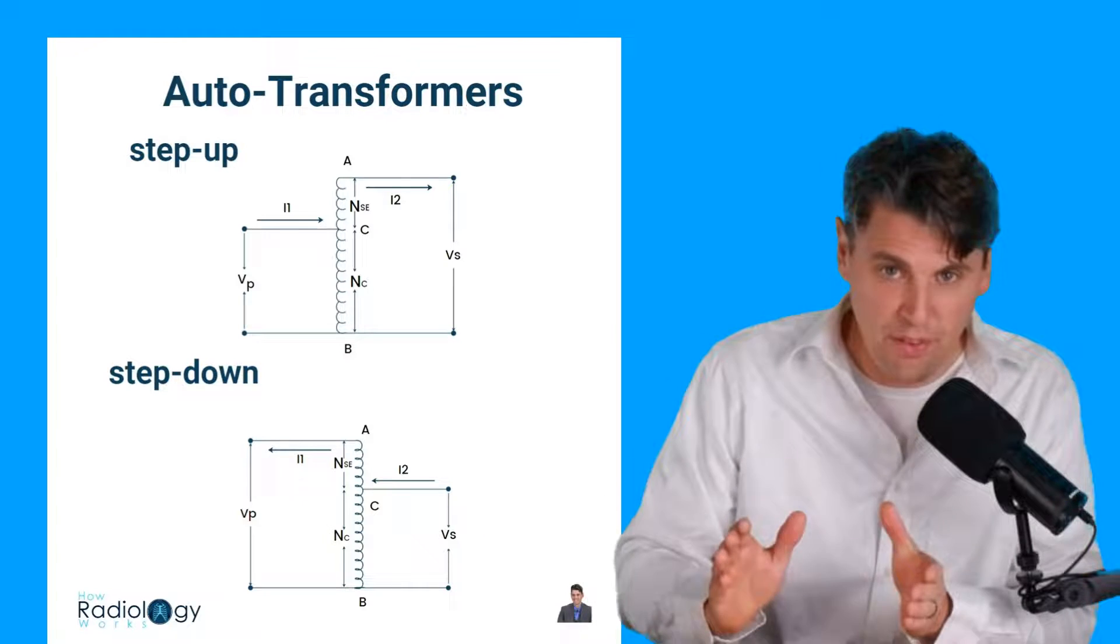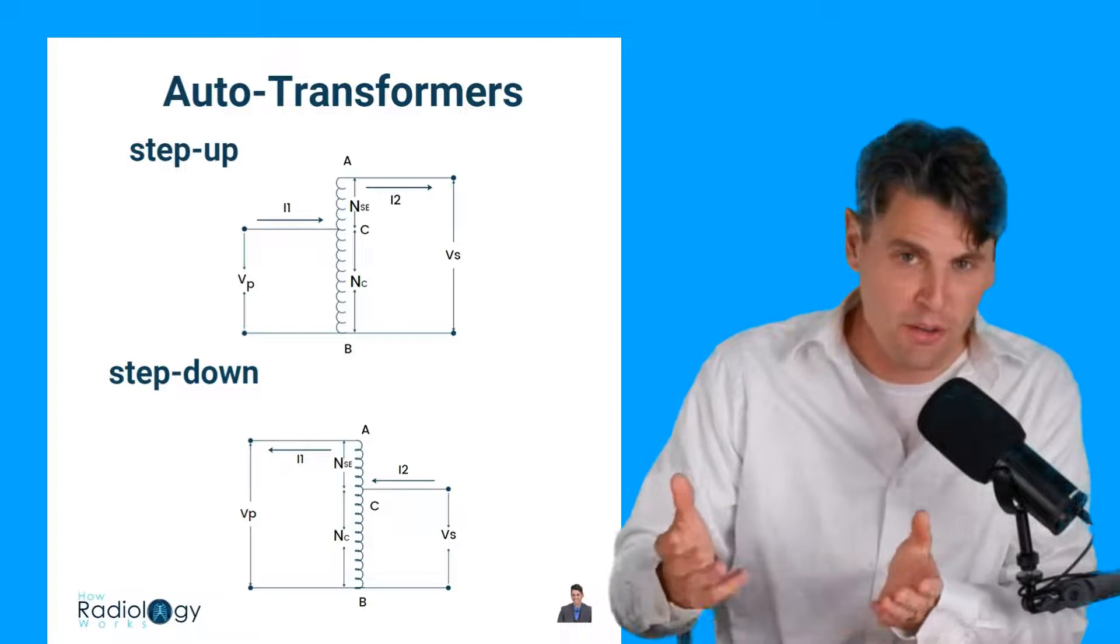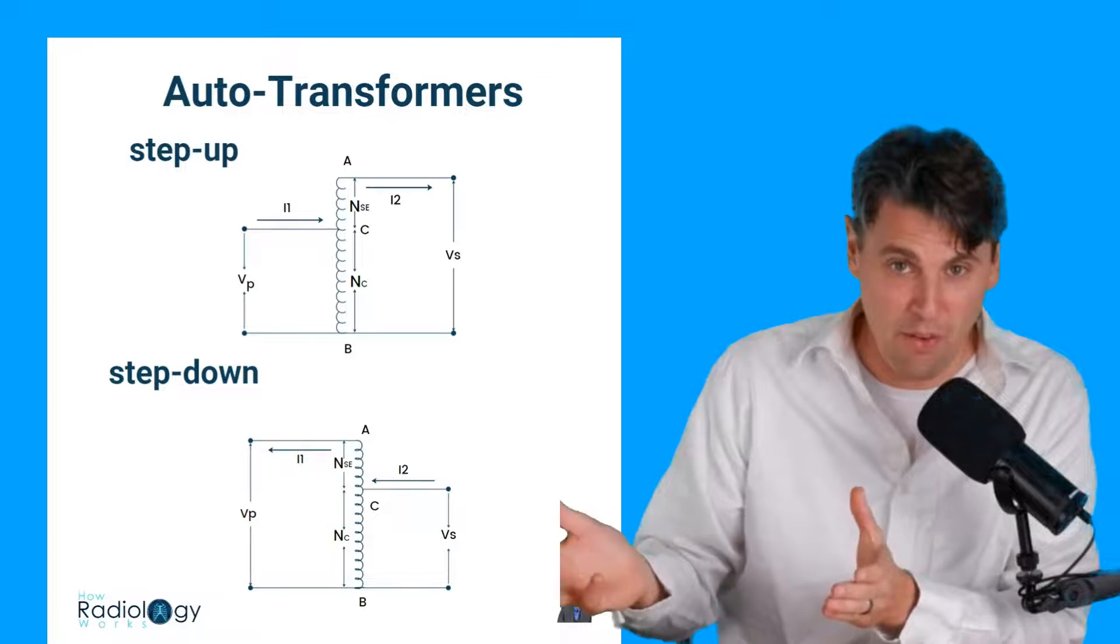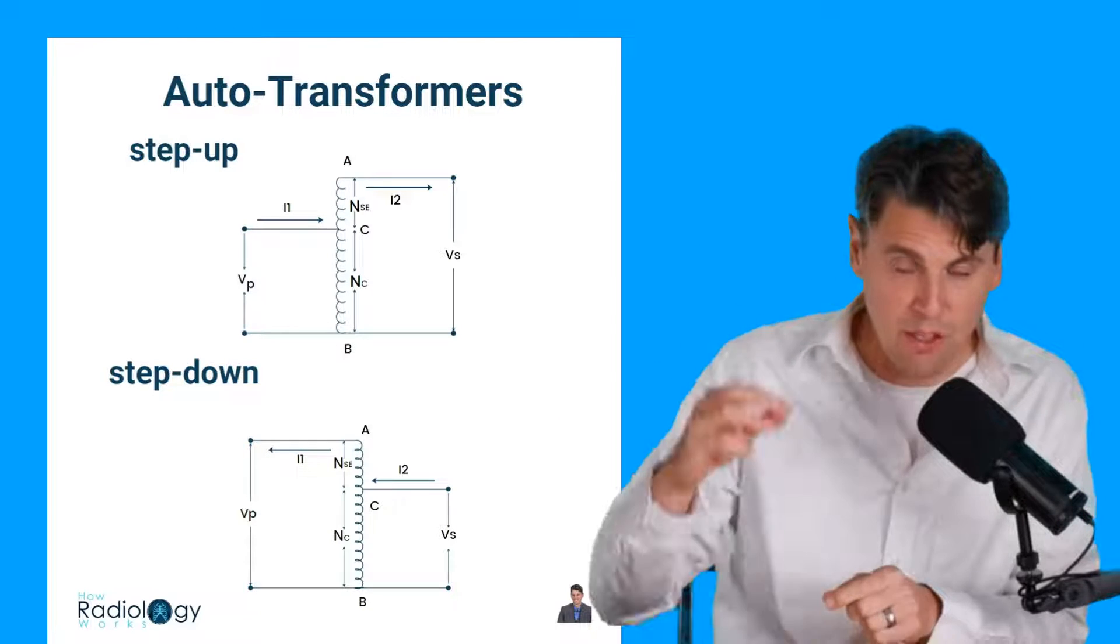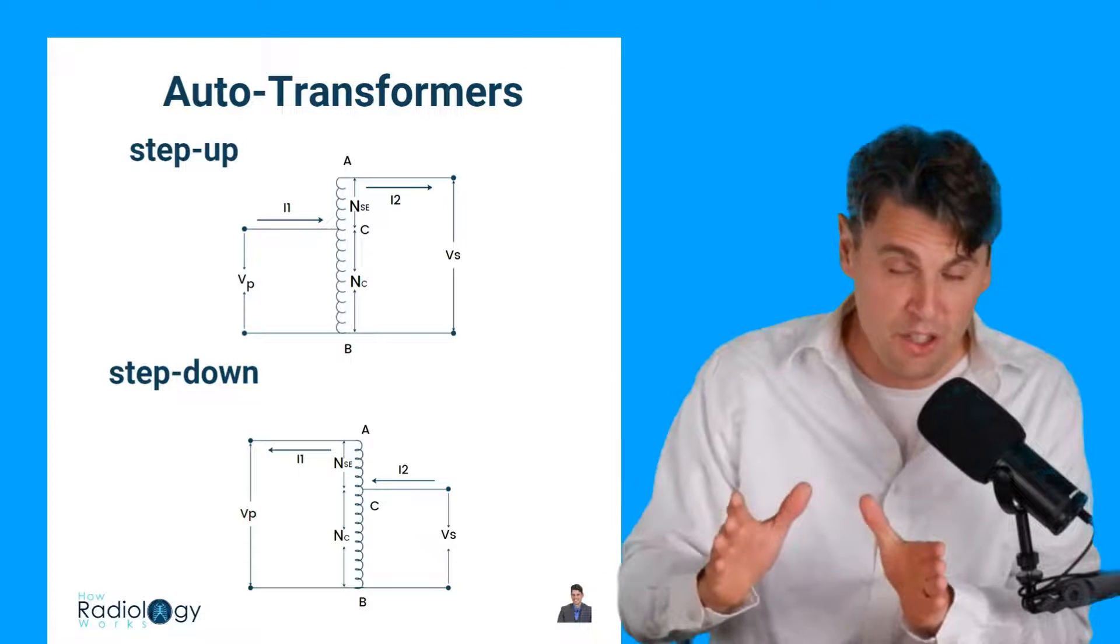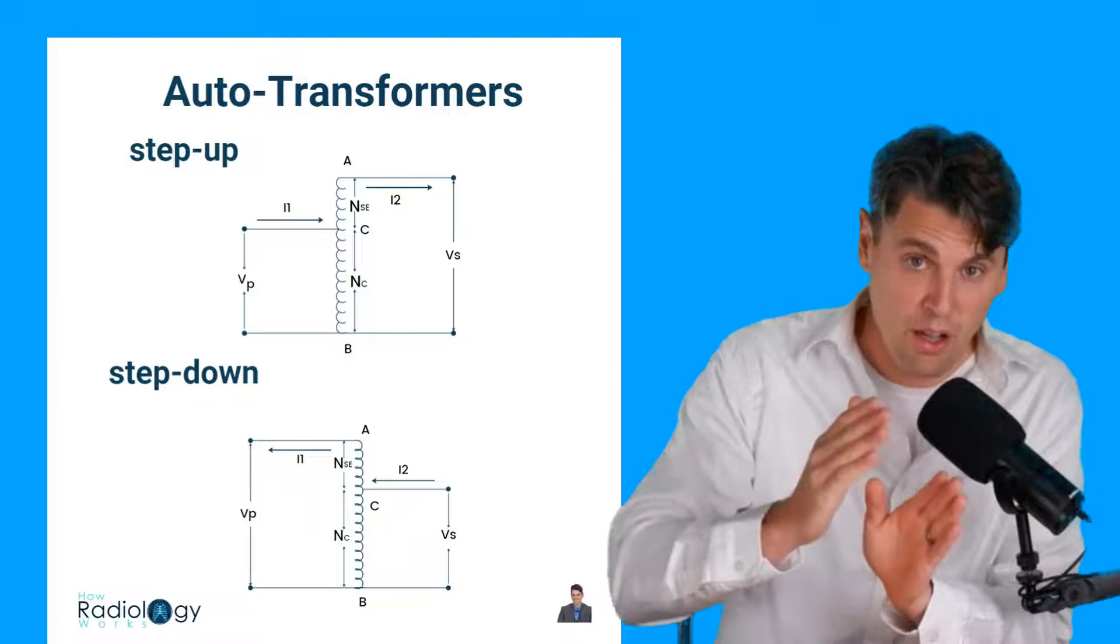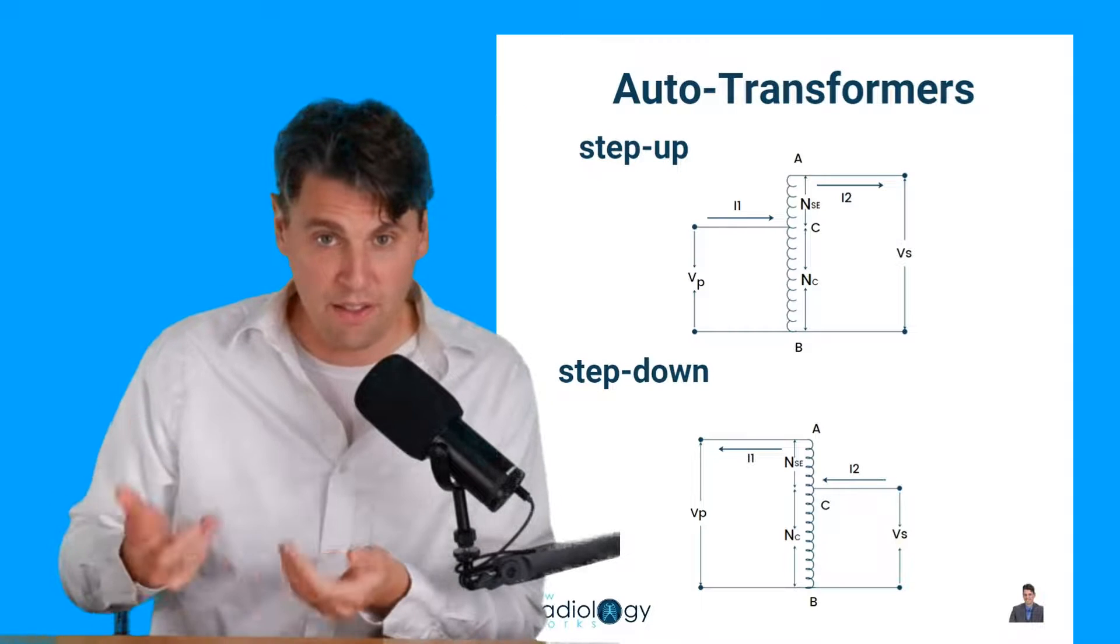There's one more type of transformer we want to talk about that's called the auto transformer or self transformer. Auto just comes from the Greek being self. And the idea here is if you take one long coil loop, and then you change actually the places where you do the taps, you can achieve the same transformation of step up or step down. These are used within our x-ray circuits.